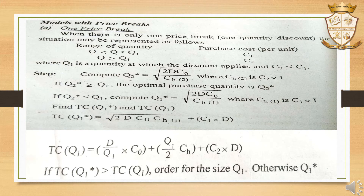The first model is one price break. That means there is a quantity Q1 and two purchasing prices C1 and C2. The range of quantity is taken as 0 ≤ Q ≤ Q1, with purchasing cost C1, and Q ≥ Q1 with purchasing cost C2. That means we have the ordering quantity provided.